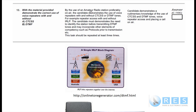By the use of an amateur radio station, preferably on air — so it can be simulated off air, but it's preferable that it be done on air. Most assessors will probably simulate this if they don't have the facilities available to them. The candidate demonstrates the use of voice repeaters with and without CTCSS or DTMF tones — for example, repeater access with and without IRLP.